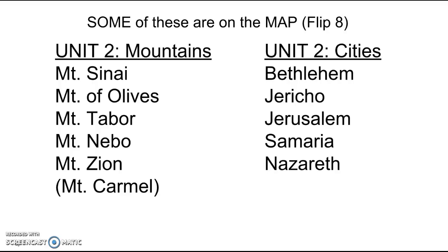On the map from the Flip 8 assignment, I pointed out where Jericho and Jerusalem are, and those will be on the map portion of the test. You also need to understand the significance of each of the five cities on the right. Jericho is the first city the Israelites conquer when they come into the Promised Land under Joshua. Archaeological evidence doesn't really support the idea that Jericho was destroyed at the time the Israelites would have been arriving, though there is evidence of people settling in Canaan and burning some cities.